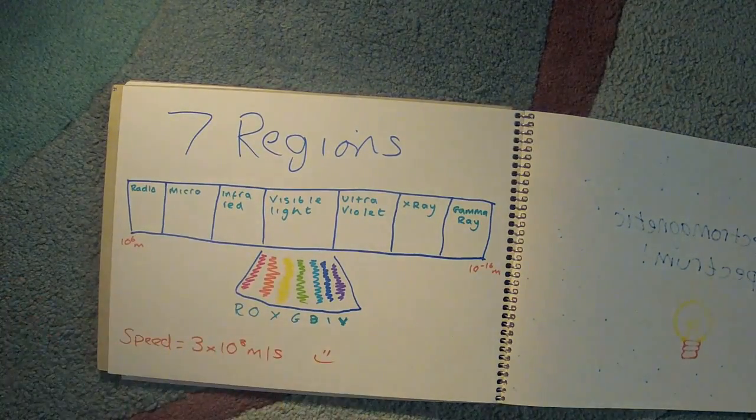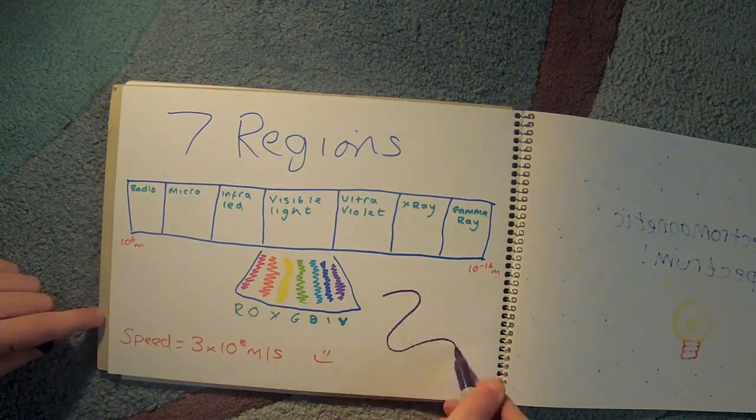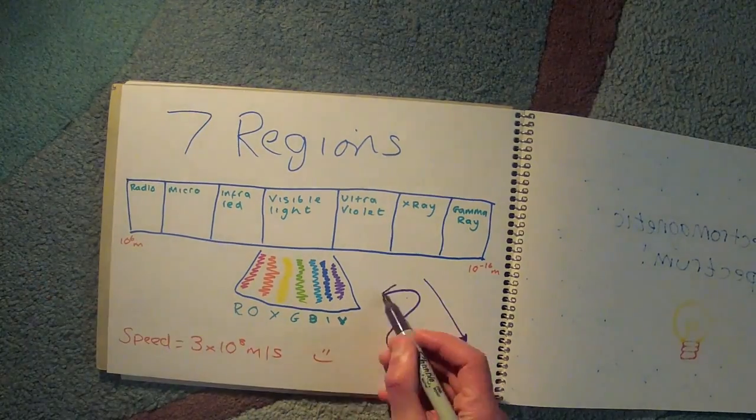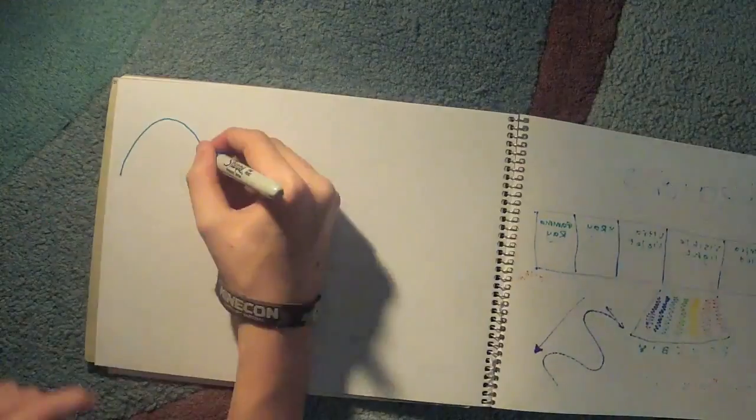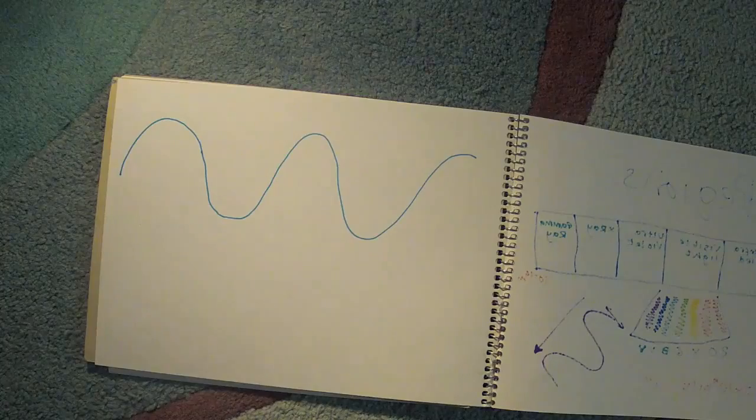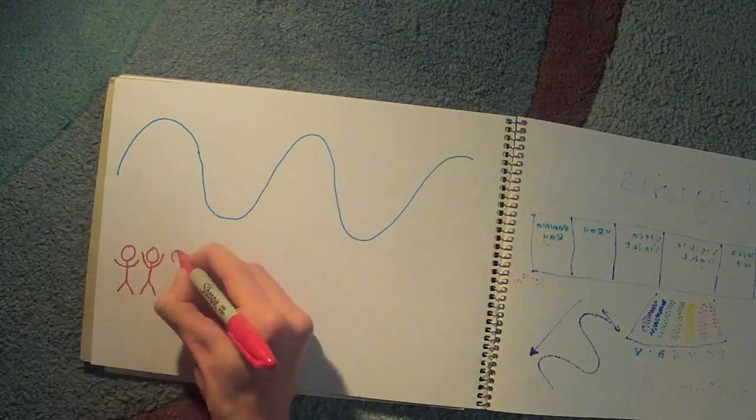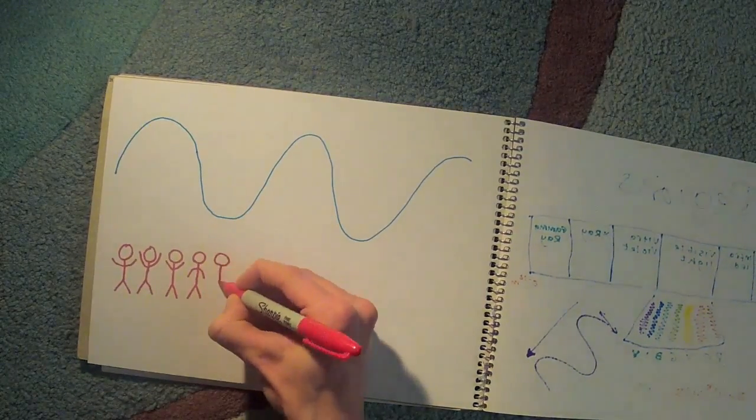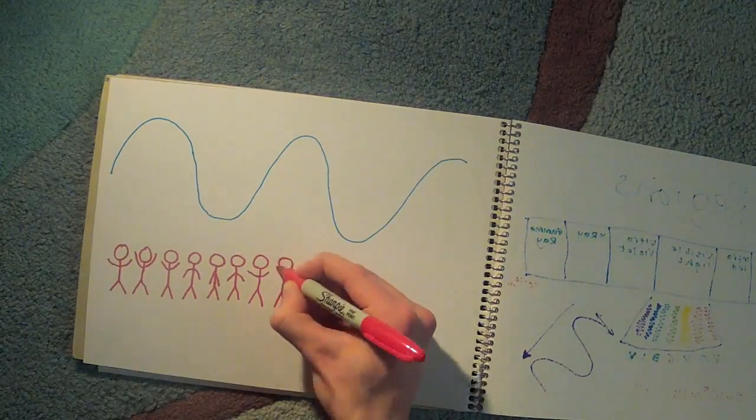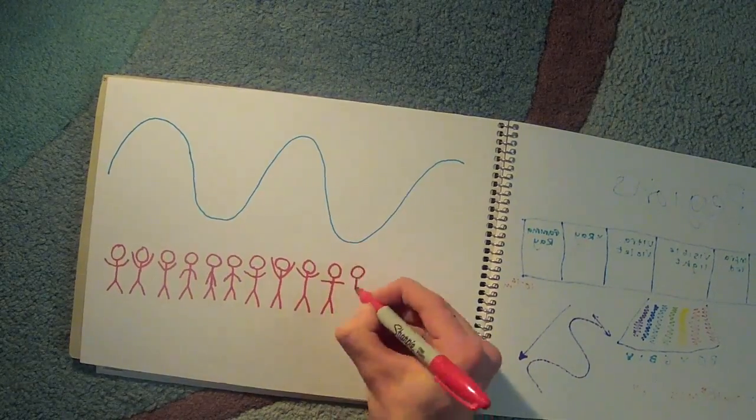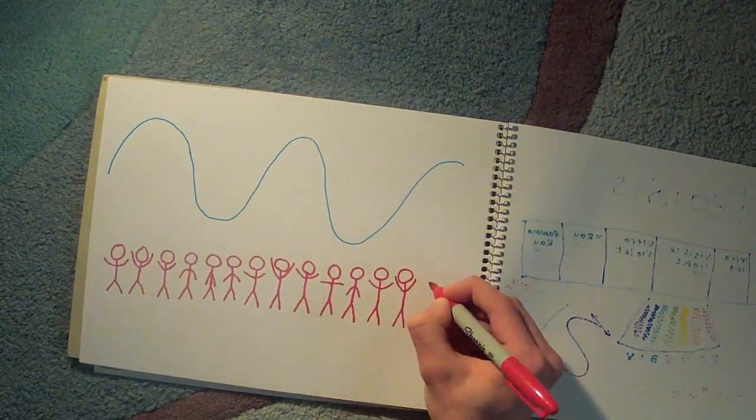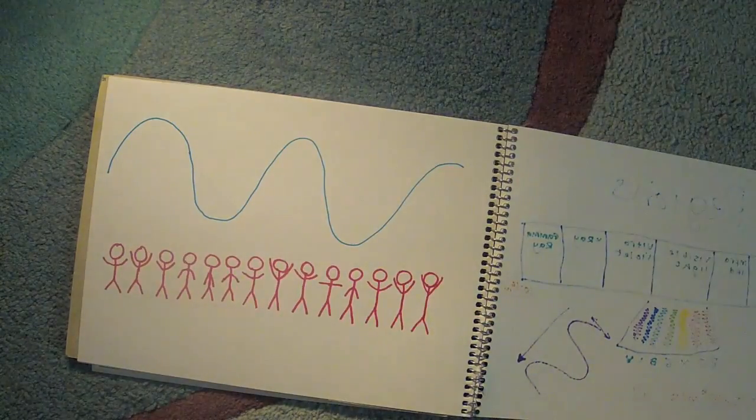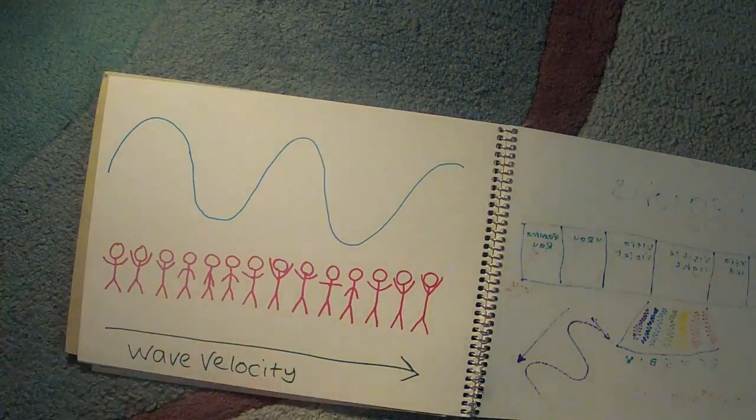They all travel at the speed of light, and they're also all transverse waves. But what are transverse waves? In transverse waves, particles in a medium vibrate at right angles with the direction of wave velocity. Imagine you're in a stadium and a Mexican wave starts. You see the wave move across the stadium from one side to the other, but individual people only move up and down. This is how a transverse wave acts and how it is transferred between one place to another.